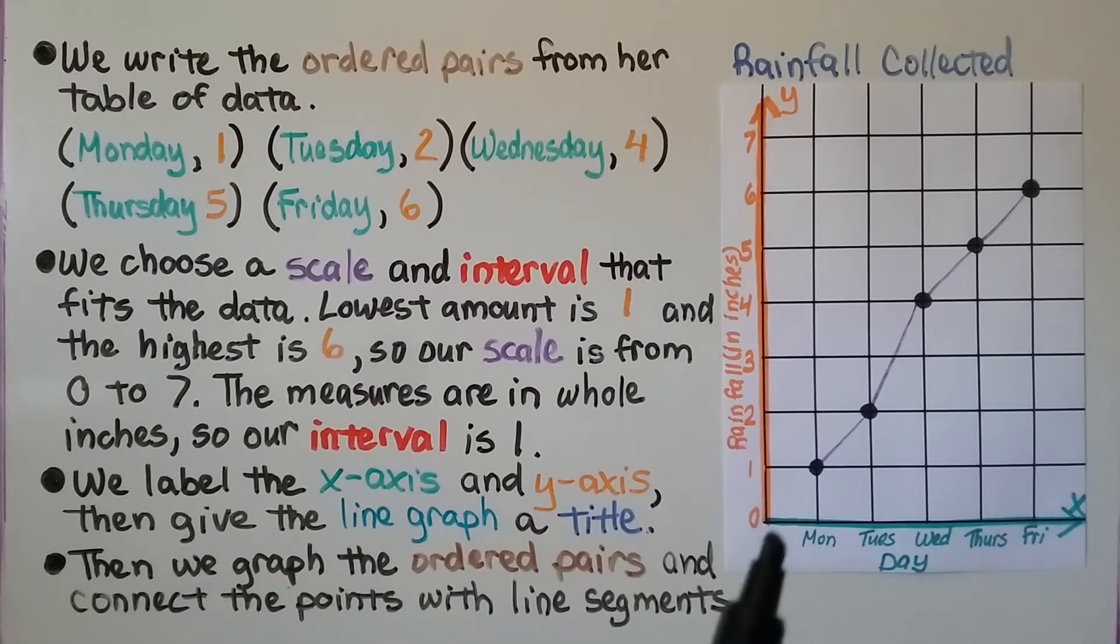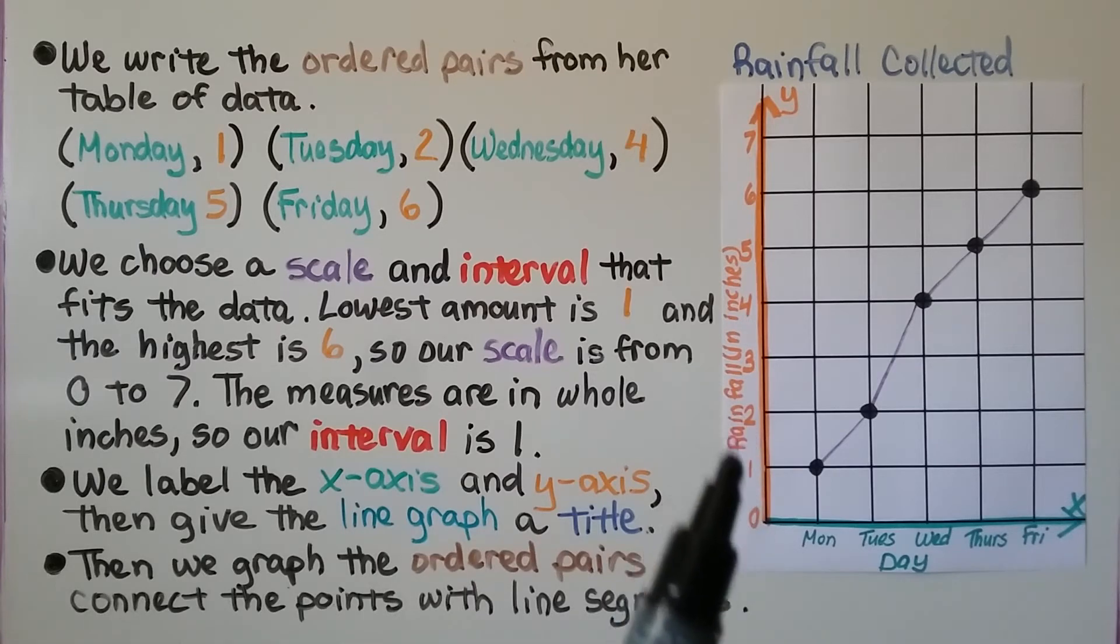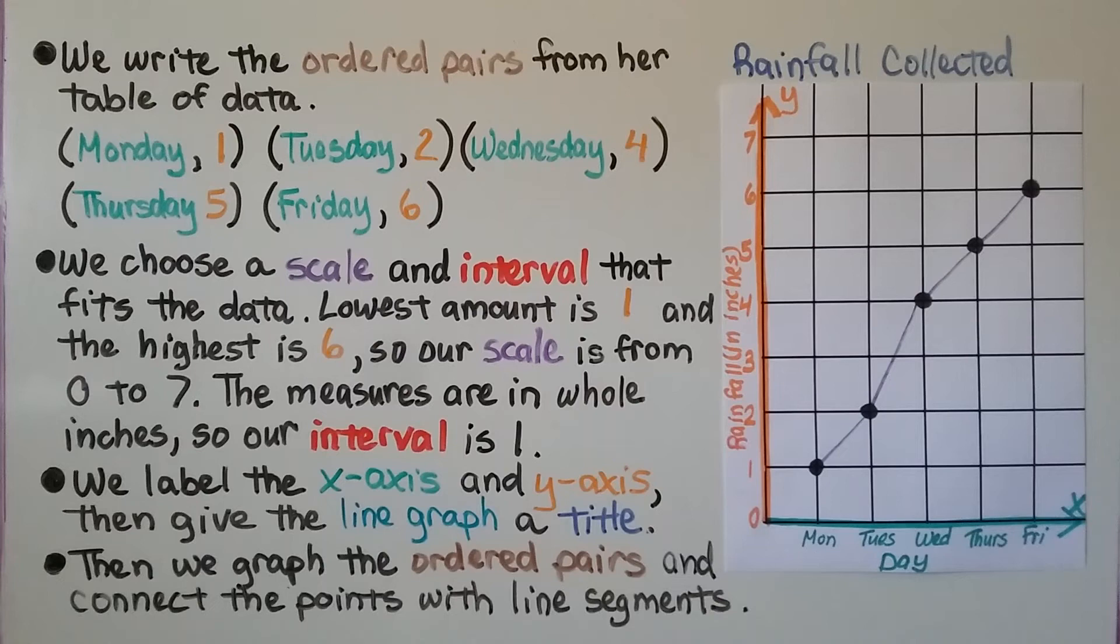And we label the x-axis and y-axis. This is rainfall in inches. This is days. We give the line graph a title. It's rainfall collected. You can see that up here.